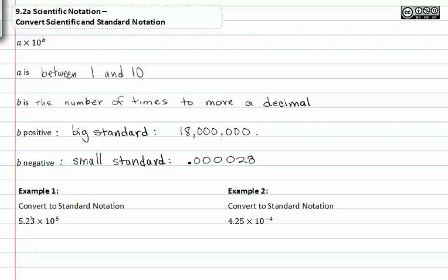Example one wants us to convert from scientific notation to standard notation. Notice that B is positive, and so our standard number or our standard notation would be a large number. Since B also helps us determine how many places to move our decimal point, we're going to take 5.23 and shift the decimal point the same number of places that the exponent tells us to. Since our number has to get bigger, we have to shift our decimal point to the right 5 places.